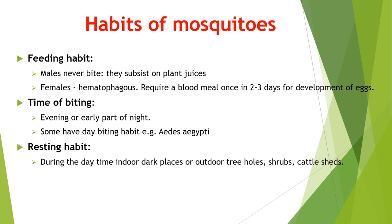Now coming to the habits of mosquitoes, which will help us to control them. First is feeding habit: usually only females bite, as they are hematophagous — they require a blood meal once every two to three days for development of eggs. Males never bite. Regarding time of biting: the majority of mosquitoes bite at evening time or at the early part of night. Some have day-biting habit, for example Aedes mosquito. Regarding resting habit: during the day time, indoor dark places or outdoor tree holes or shrubs are favored by mosquitoes for resting.